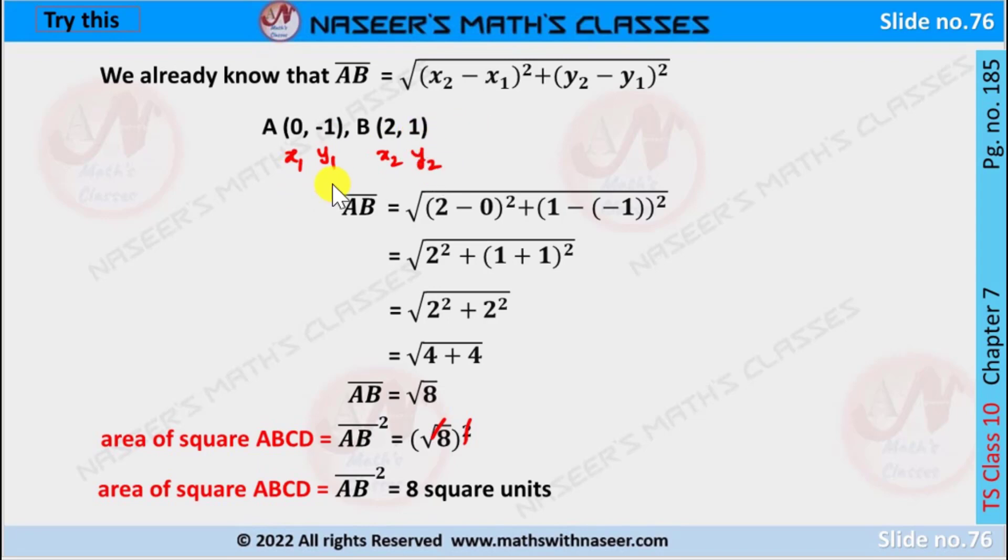Then we substitute x₁, y₁, x₂, y₂ values in the above formula. AB equals square root of (2 - 0)² plus (1 - (-1))². This becomes square root of 2² plus (1 + 1)². 2² becomes 4 and 2² becomes 4. Here 4 plus 4 becomes 8.